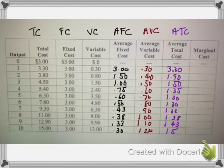Average total cost will always start high, get low, and then increase again. The ATC column is the sum of AFC and AVC. Because average fixed costs are getting smaller and smaller, at first average total cost declines, but over time as we increase output the average variable cost continues to get larger and larger. So ATC is the blending of these two curves — it's going to be falling, hitting a minimum, and then rising. We're going to see what that looks like graphically in another screencast.